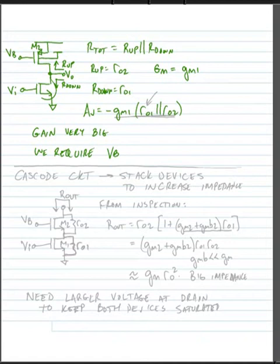So we can see that using a current source load gives us a very large gain. We expect R01 and R02 to be very large, so the product of gm1 times R01 in parallel with R02 will be very large.